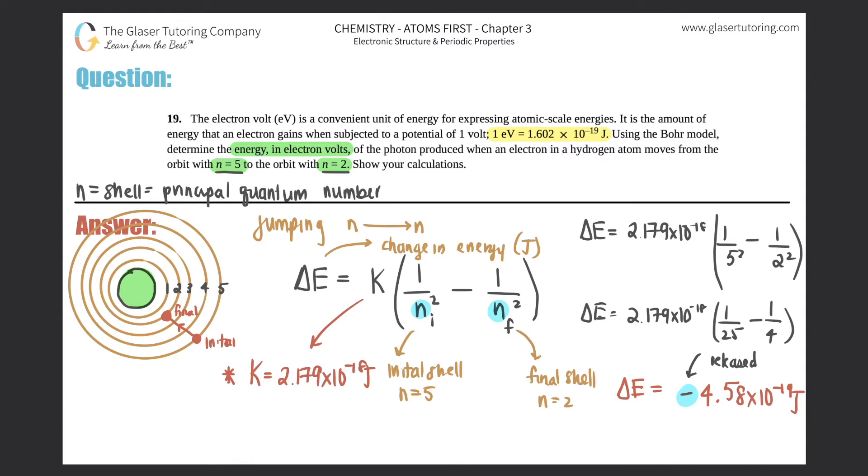But the question was, we need to know, determine the energy in electron volts. We found it out in joules. Now we just got to find electron volts, but they did give us the conversion factor. 1 EV equals 1.602 times 10 to the negative 19 joules. So just straight up conversion, I'll put it over here, negative 4.58 times 10 to the negative 19th joules times by, joules on the bottom, electron volts up top. The conversion tells me that 1 electron volt equals 1.602 times 10 to the negative 19th. Joules will cancel out, and you are left with electron volts. So this divided by 1.602 times 10 to the negative 19th.